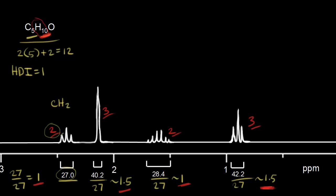This signal has three peaks. Using the n+1 rule — if you have n neighbors, you get n+1 peaks — three peaks means three minus one equals two. So these CH2 protons have two neighboring protons.